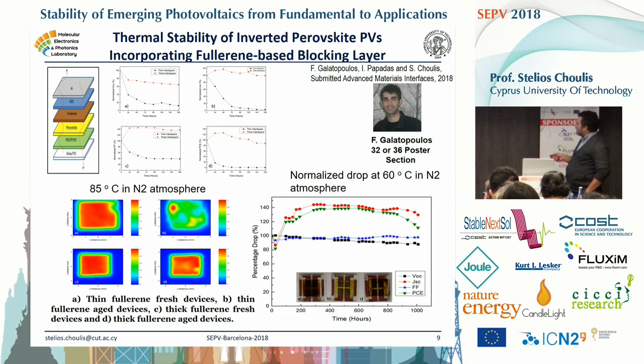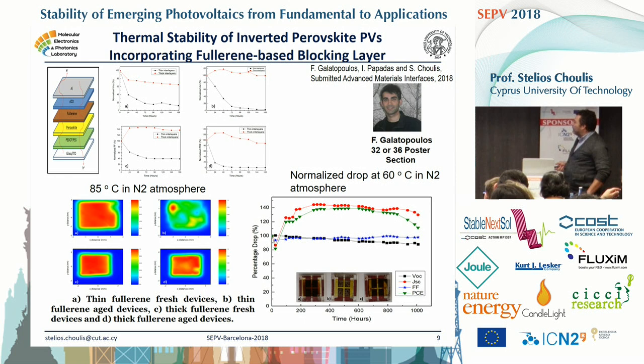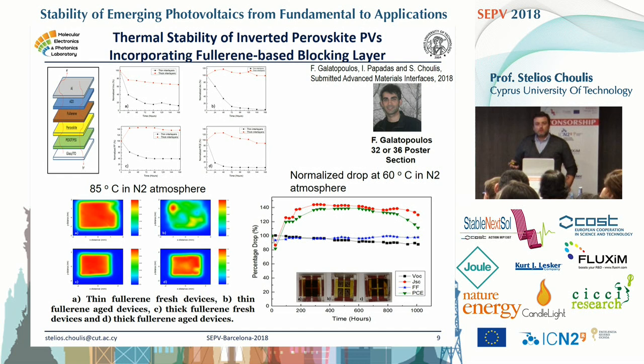There is a poster by Fedoros Galactopoulos — I think it is number 32 — where he can give you more details about this. We started working on this structure for lifetime studies. The structure is: perovskite, fullerene, AZO, and aluminum as the top electrode. We want to find the conditions which can affect the electrode's degradation, so thermal degradation affecting the electrode.